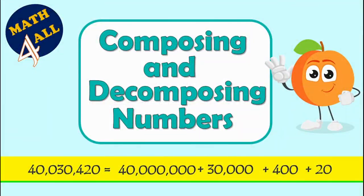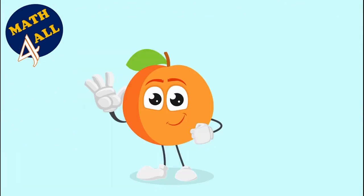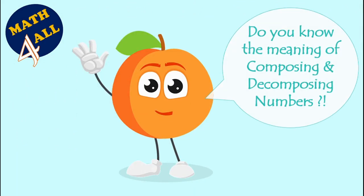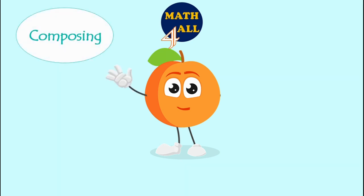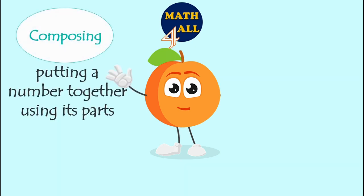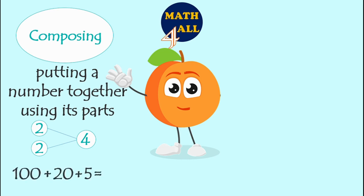Composing and decomposing. Do you know the meaning of composing and decomposing numbers? Here we go. Composing means putting a number together using its parts. For example, 2 and 2 — I can compose it as 4. Another example: if I compose 100 plus 20 plus 5, the result will be 125. So composing means putting together.